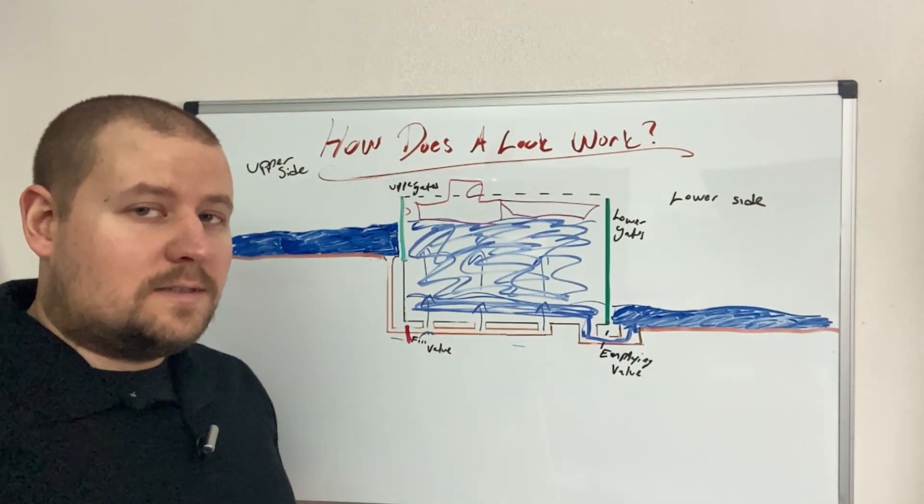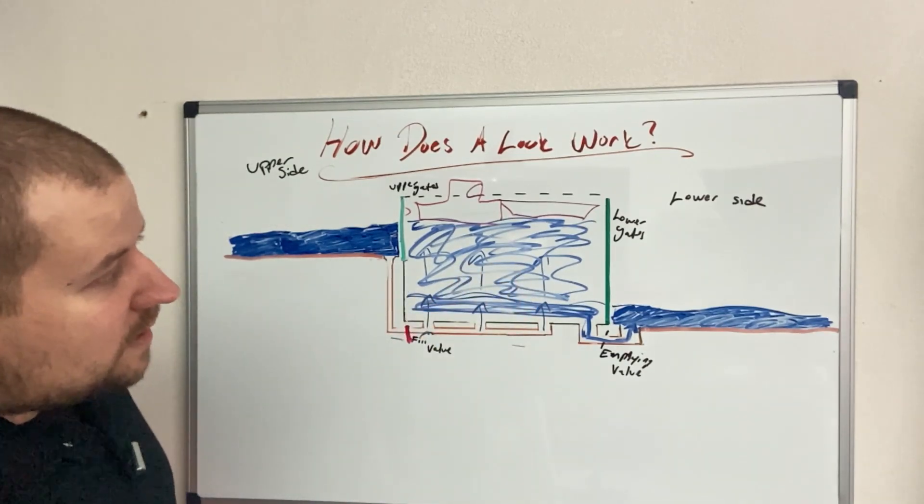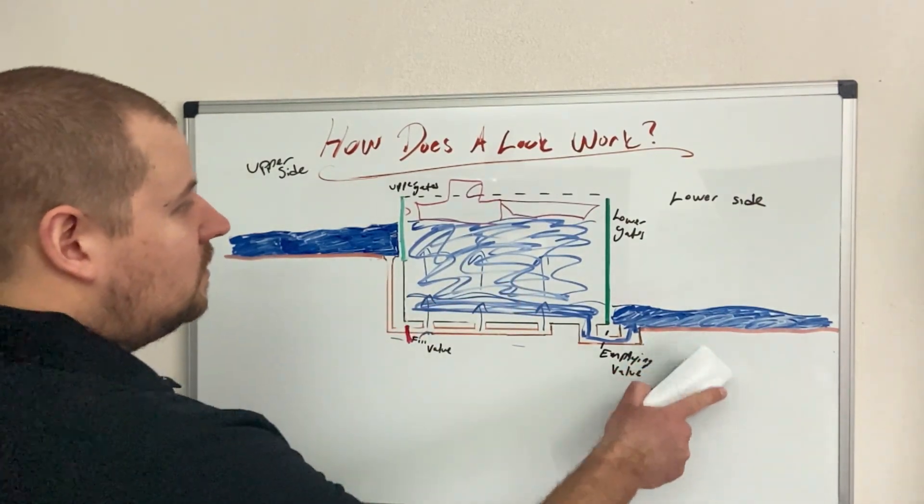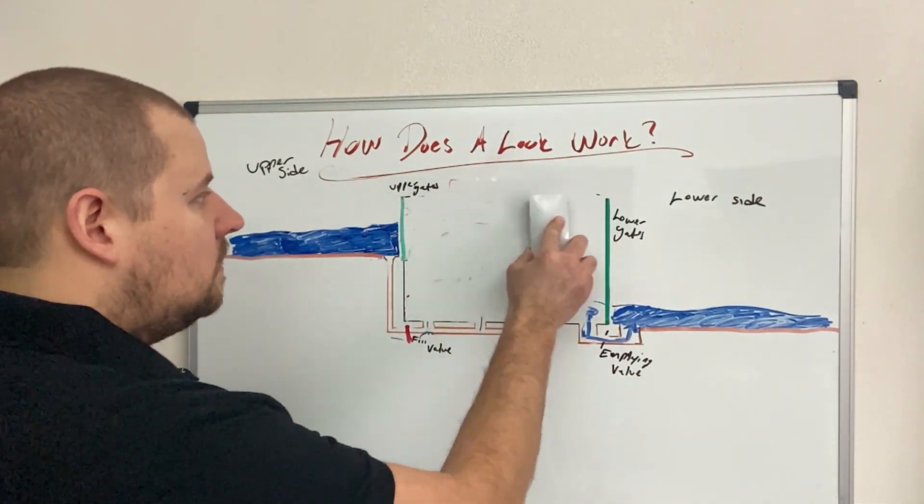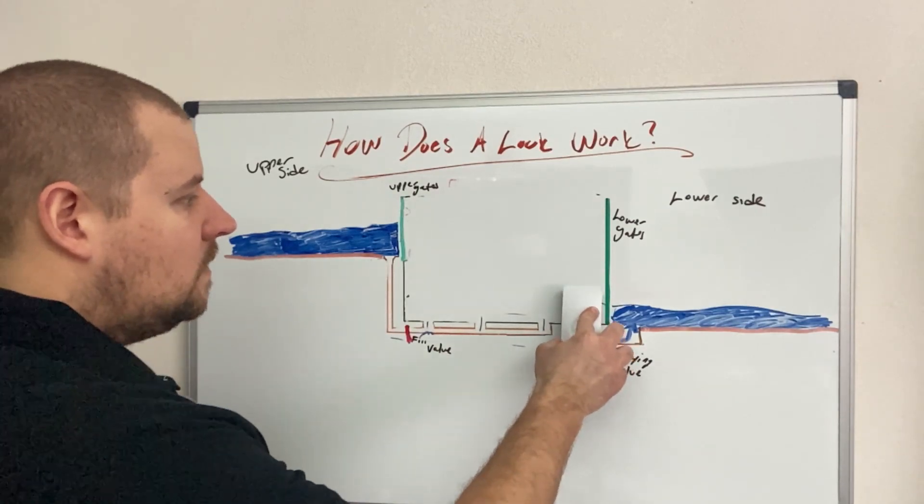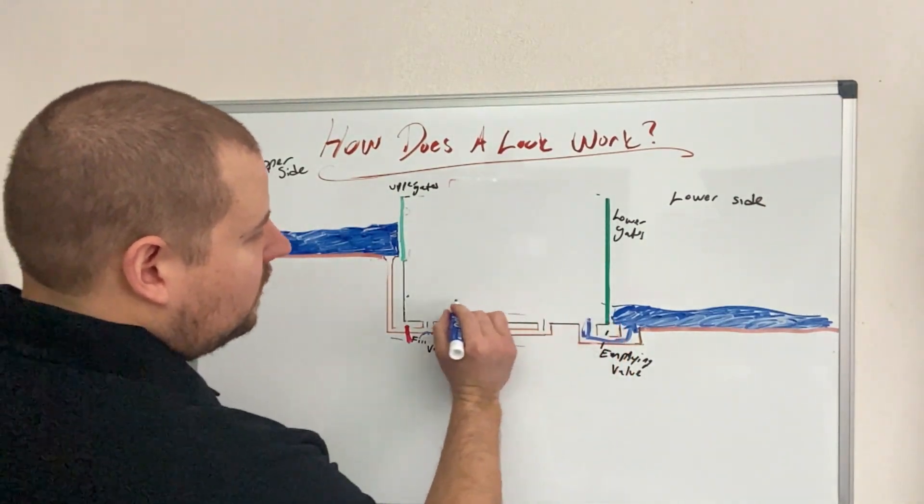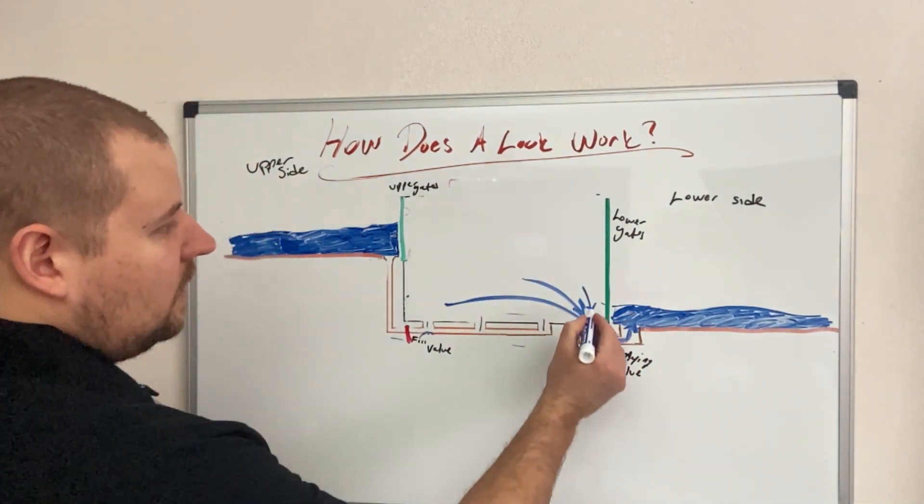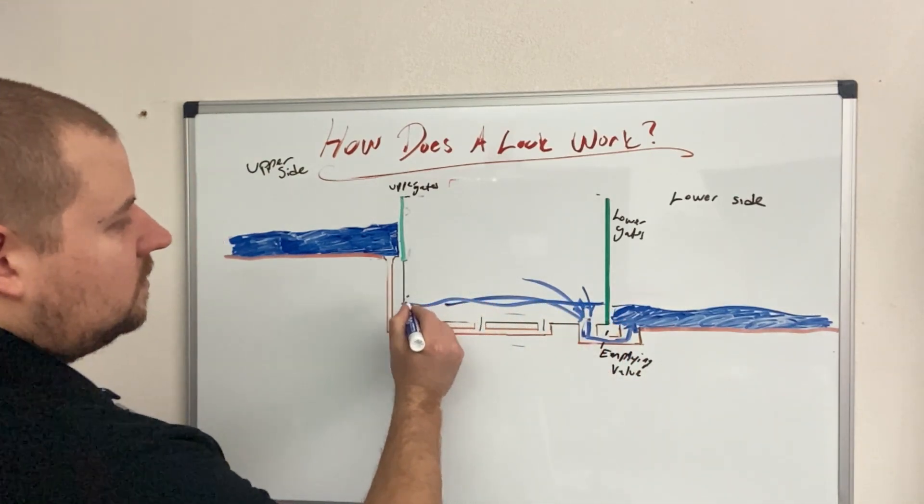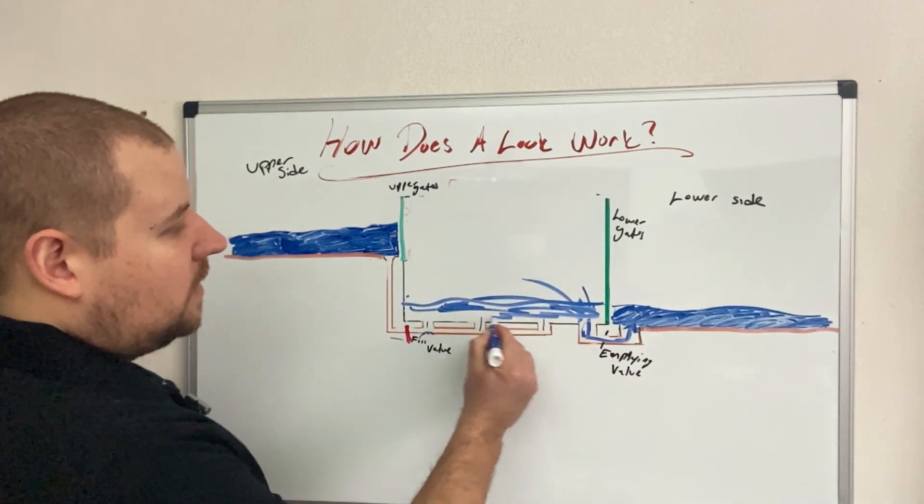And so now what happens is the entire lock on the same principle as filling the lock empties. Gravity wants to bring the water down to the lower side. All this water has now flown out, and now we have water that is equal level once again to the river that is on the low end of the lock.